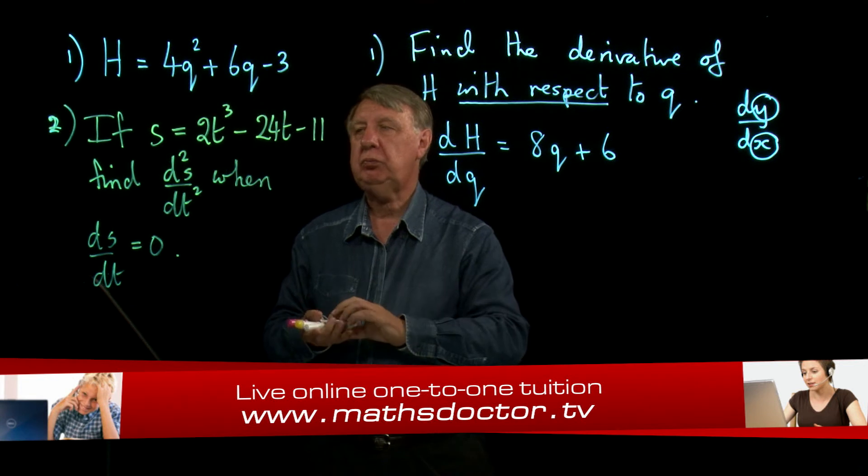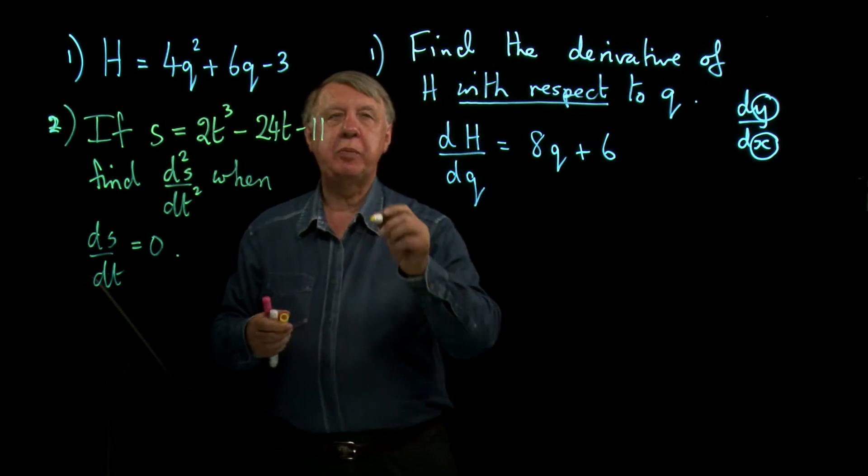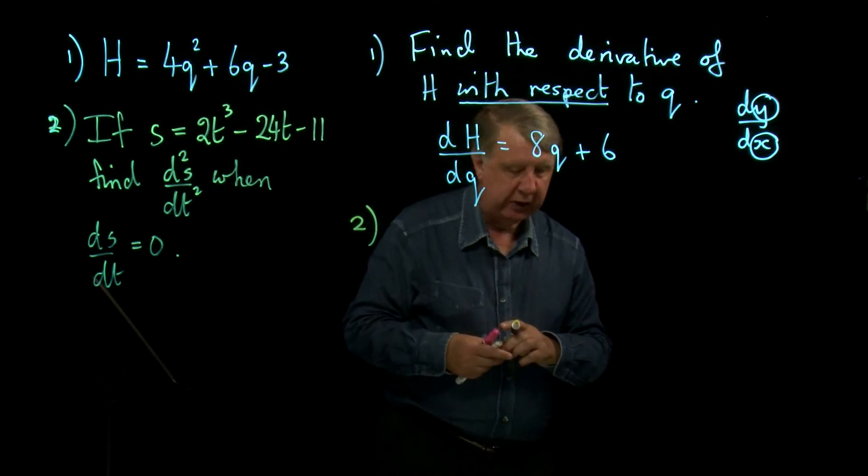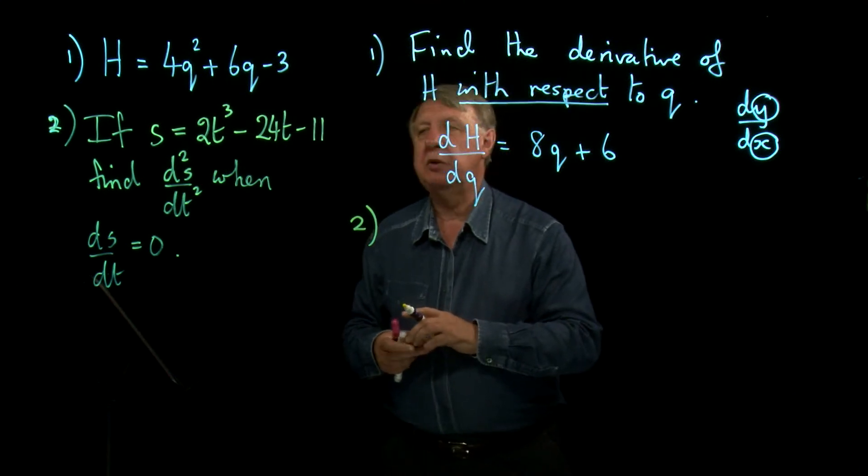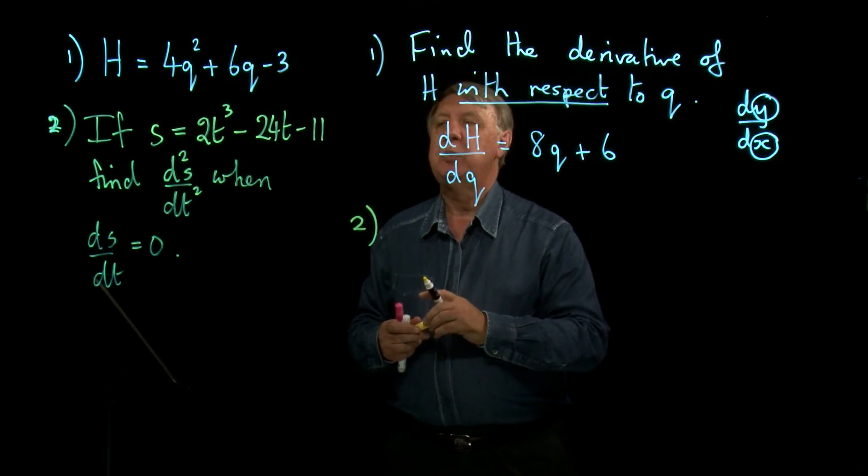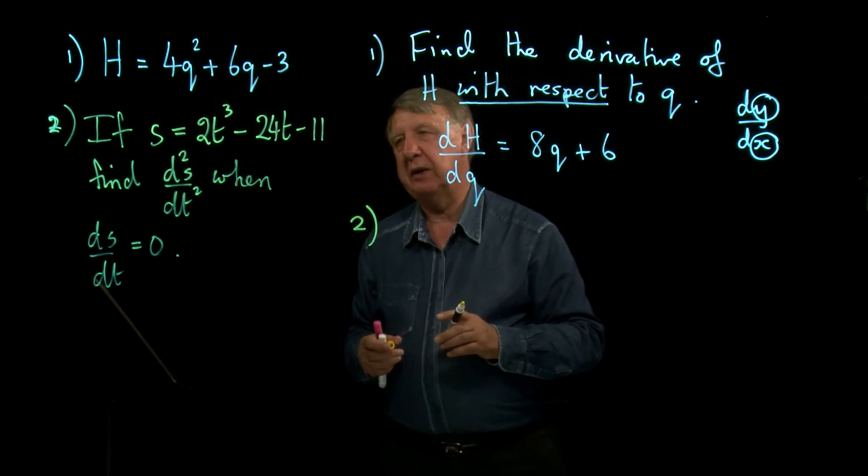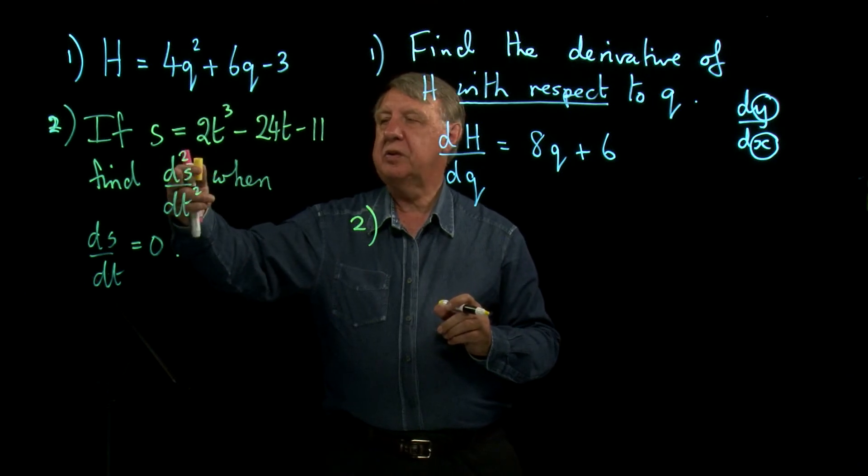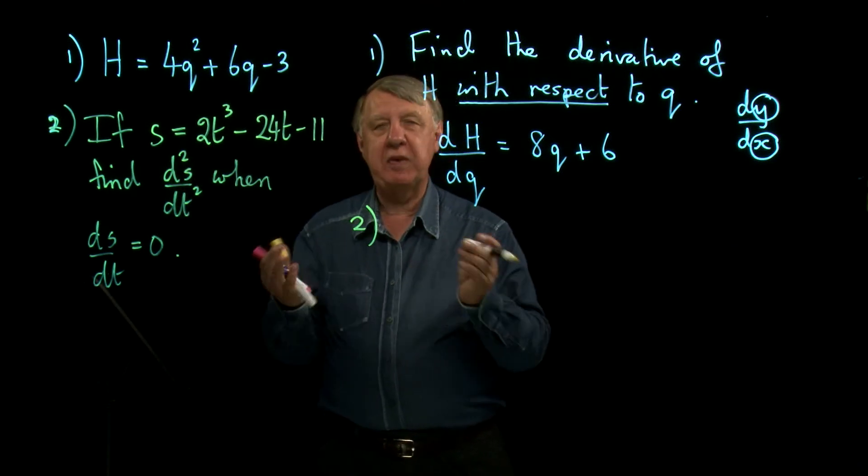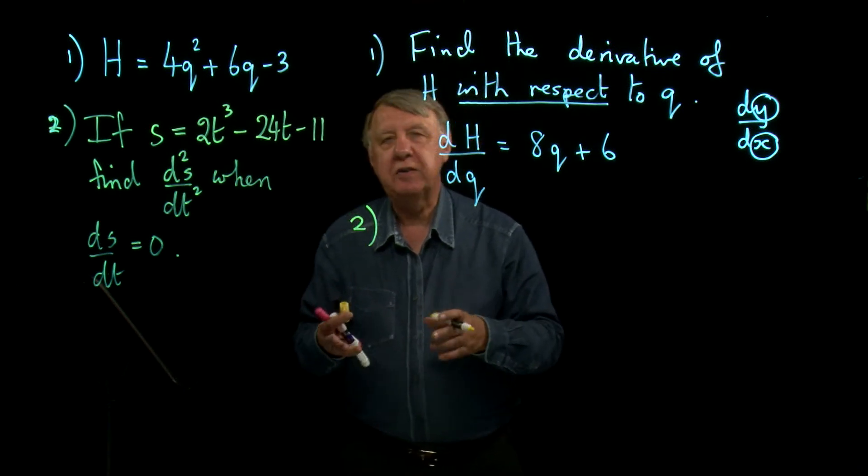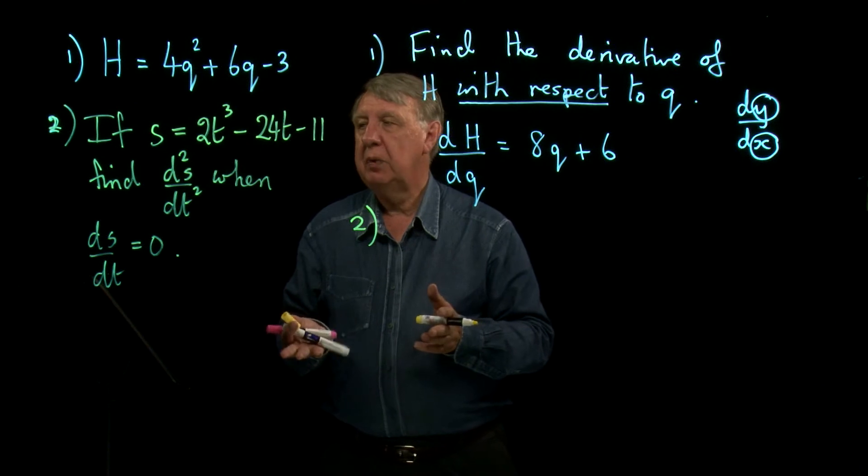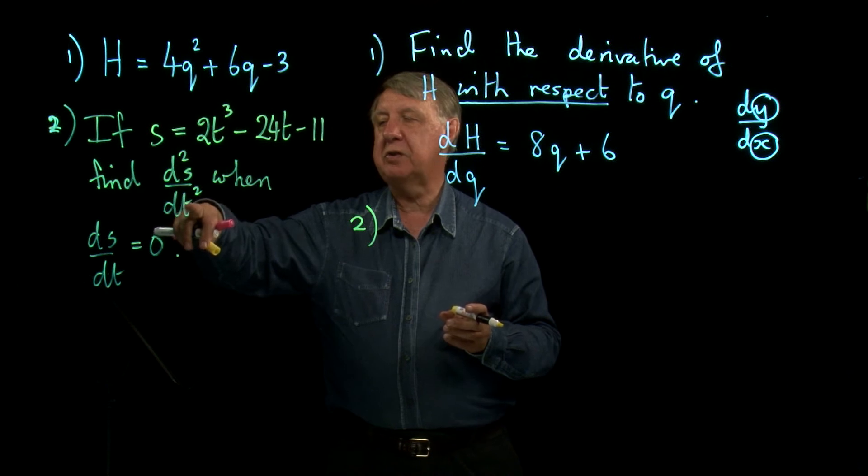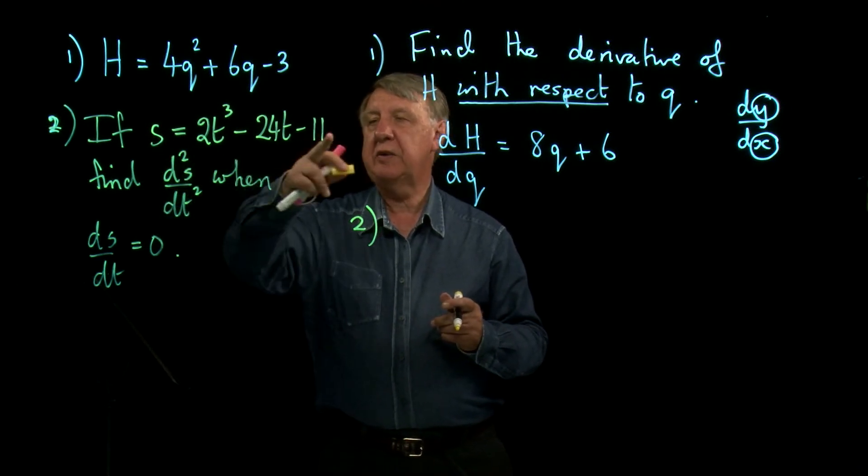The second one is a little bit more involved. It's related to an application of differentiation that we should be looking at as a separate lesson, but we can still do this purely as an algebraic exercise. This time it wants d²s/dt²—that's the second derivative, which means differentiate twice. Instead of differentiating with respect to x, I'm being asked to differentiate with respect to t. Here's my expression for s.